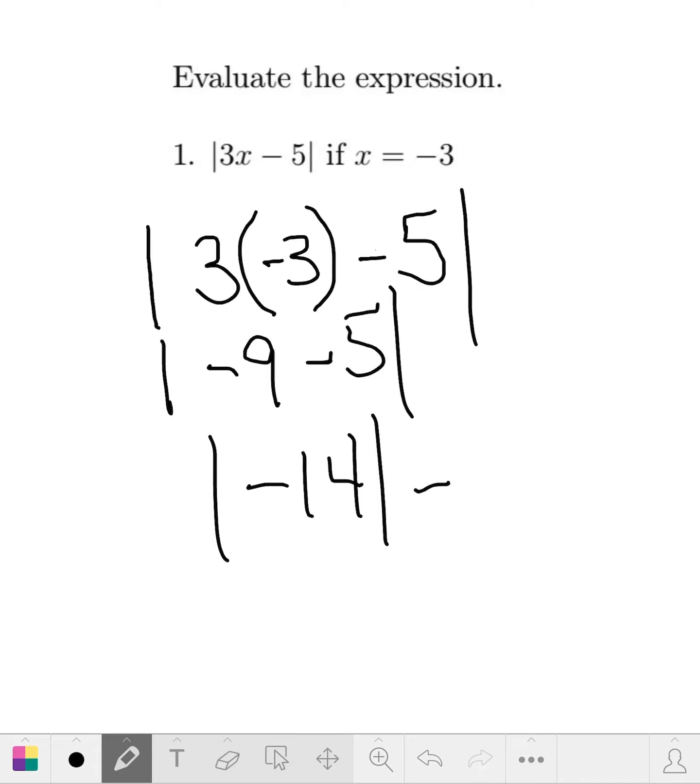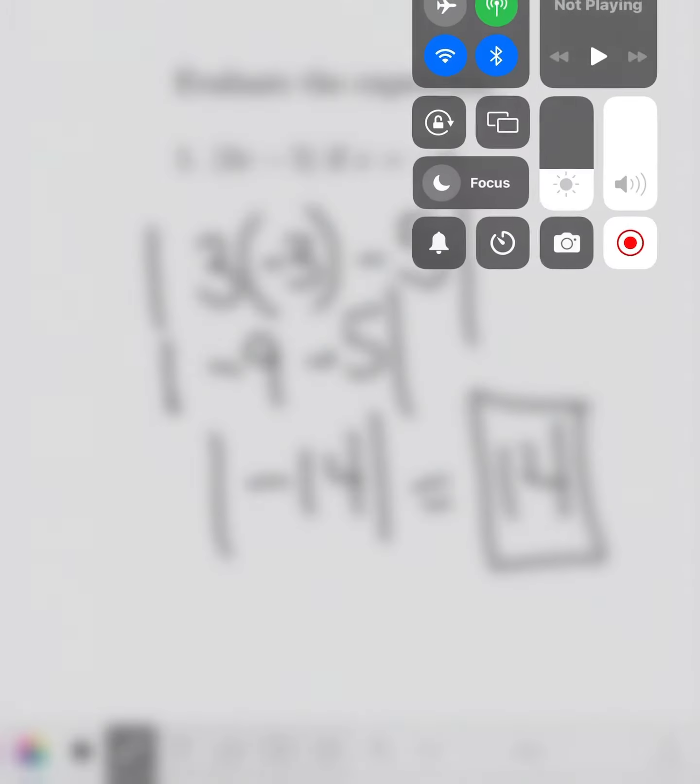Now the absolute value rule says that anything that's inside that's a negative would become a positive when it comes out of the absolute value signs, so your answer is 14. Let's square that off, and that's the answer. Good luck, thank you very much.